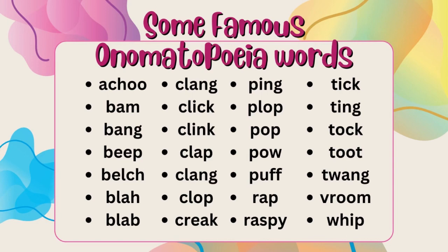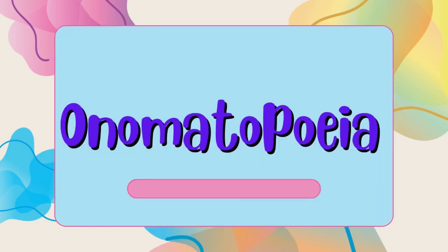ان کو پڑھ کے آپ کو اندازہ ہو جائے گا کہ onomatopoeia کیا ہے — یعنی کسی word کے لیے کسی ایسے sound کا استعمال کرنا جس کو سوچنے کے بعد ہمیں فوراً وہ چیز ذہن میں آ جائے۔ جیسے میاؤں بلی کی آواز ہے، buzzing سے مکھیاں ذہن میں آتی ہیں، اور tick-tock سے گھڑی کا concept سمجھ آتا ہے۔ Students, I hope آپ کو onomatopoeia کا concept سمجھ آ گیا ہوگا۔